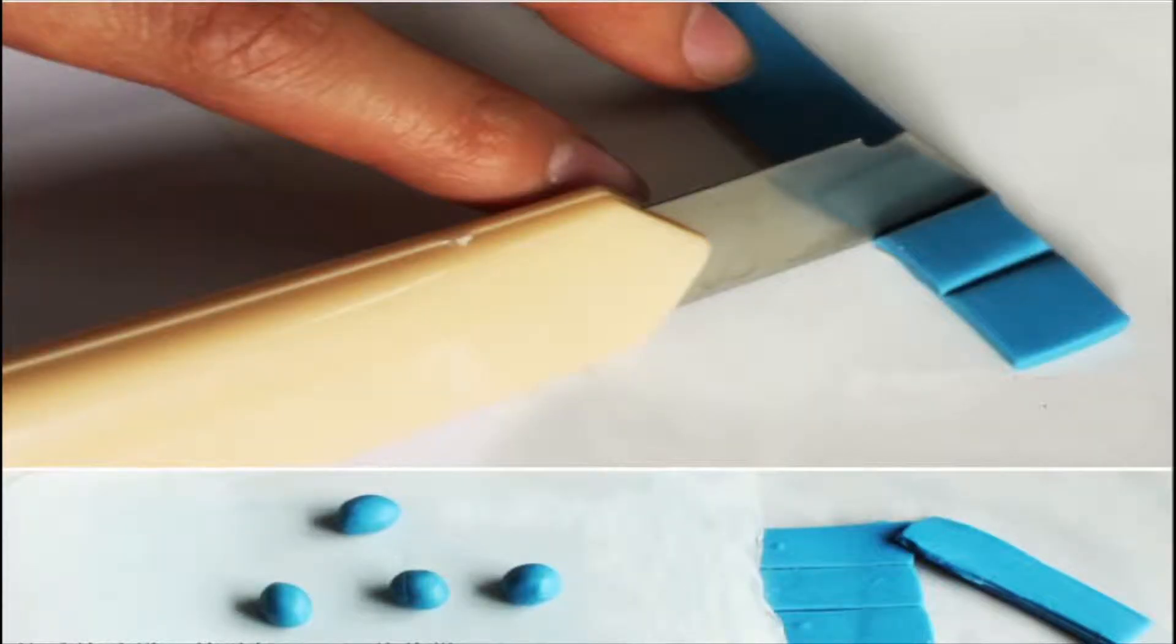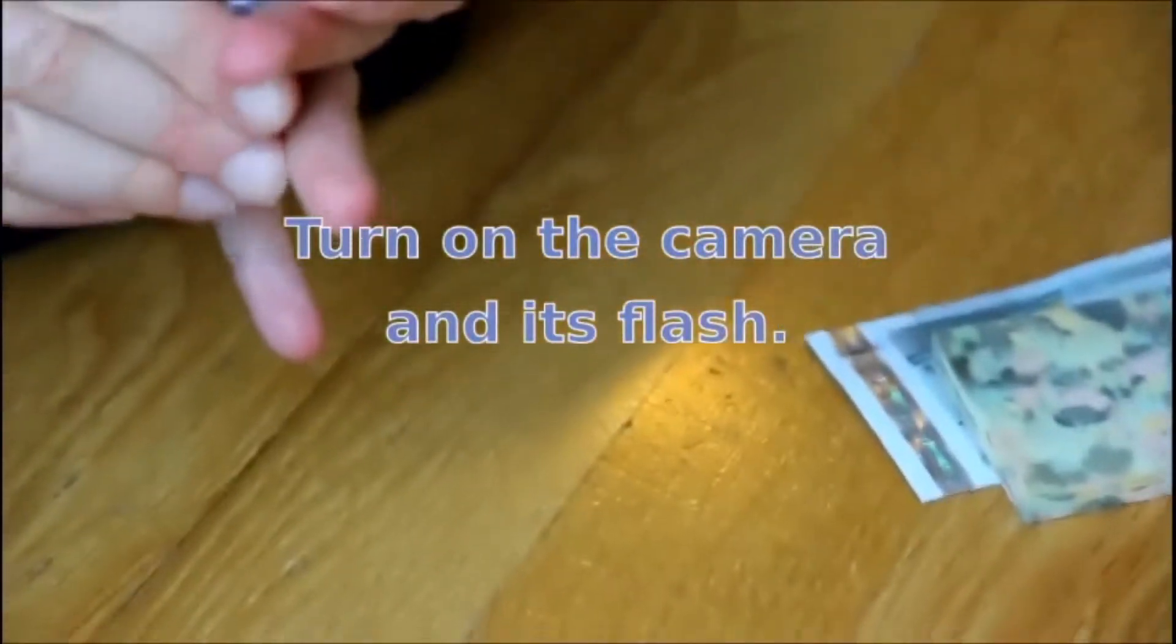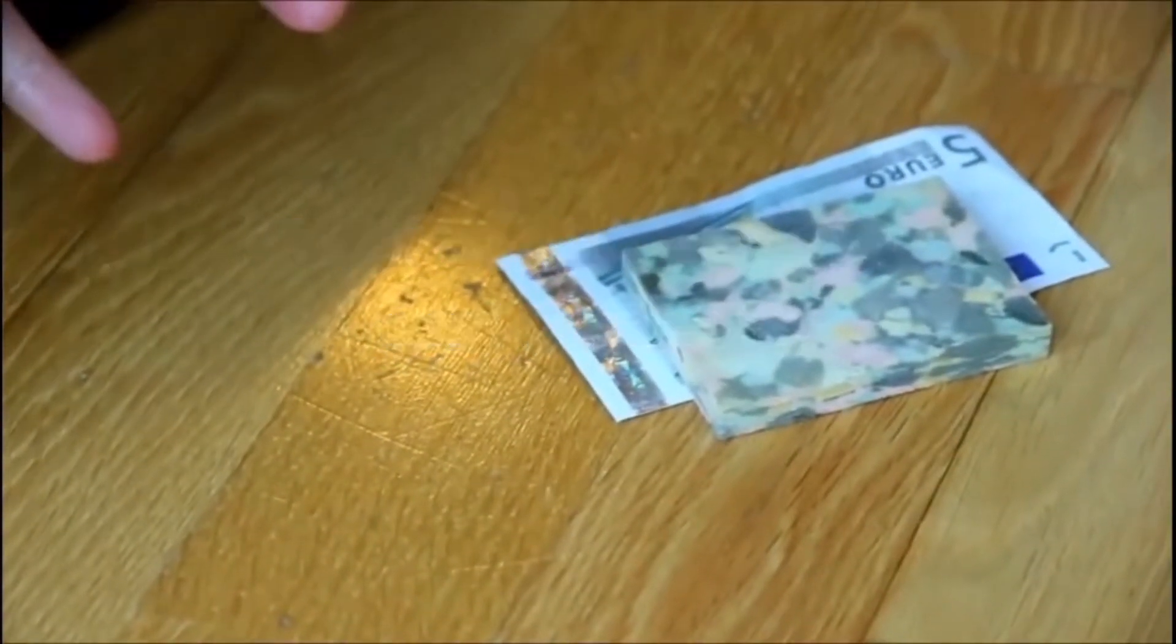Get a piece of blue tack and attach the lens in front of the phone camera like that, and turn on the camera and its flash.